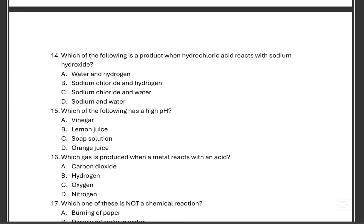14. Which of the following is a product when hydrochloric acid reacts with sodium hydroxide? Let's look at the chemical reaction guys. We are having a hydrochloric acid which is HCl and it is reacting with sodium hydroxide, that is NaOH. And the products that we'll get here is H2O plus NaCl. Cl, Cl, H, H, H, O, Na.